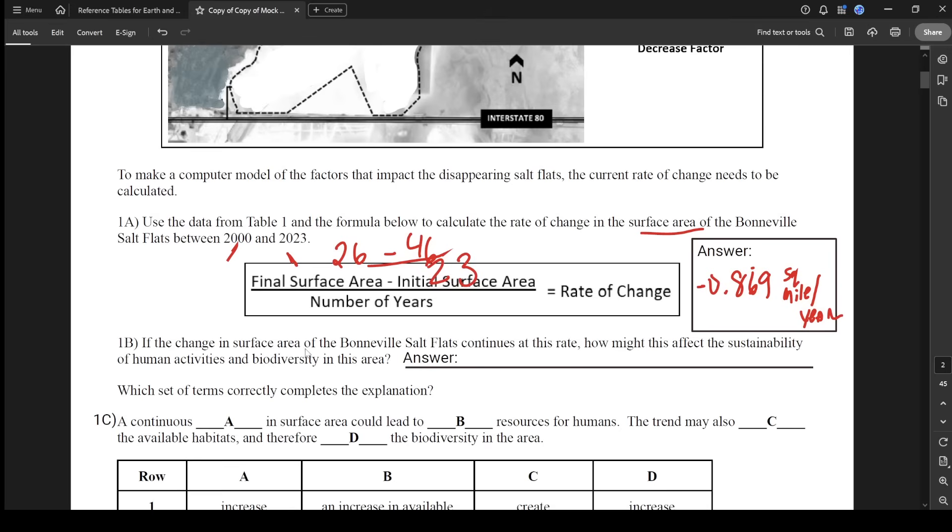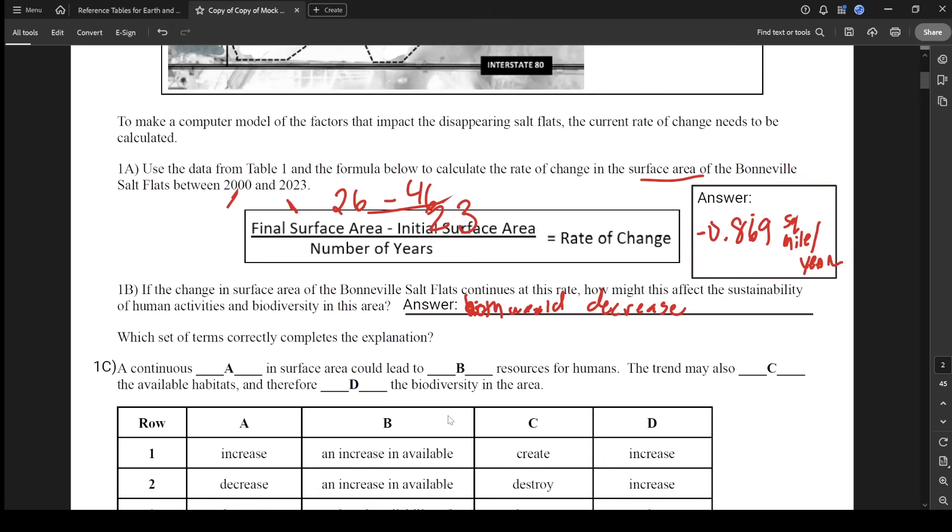If the change in surface area of the salt flats continues at this rate, how might this affect the sustainability of human activities and biodiversity? So it's shrinking. Everything's going to decrease. So we would just say both would decrease. If the area is getting smaller, that's what it would be.